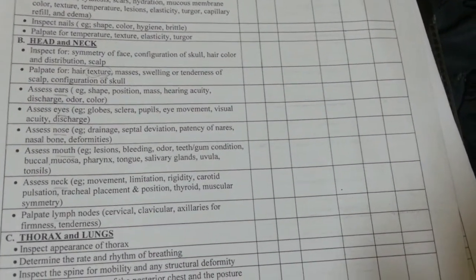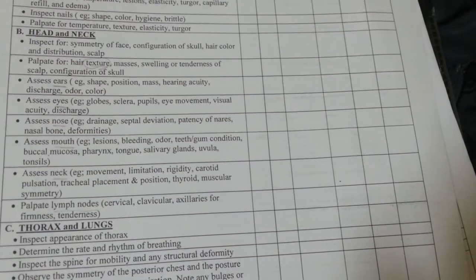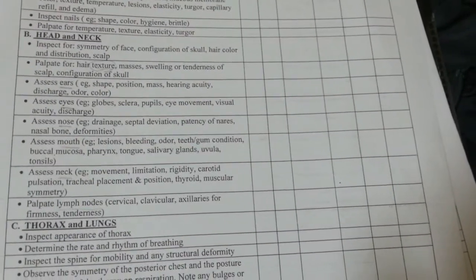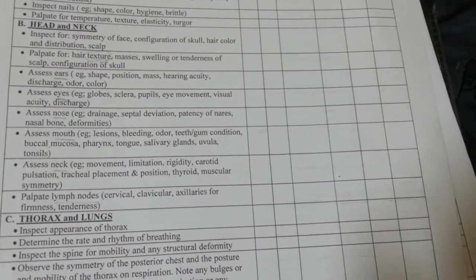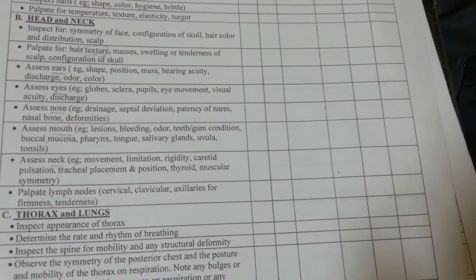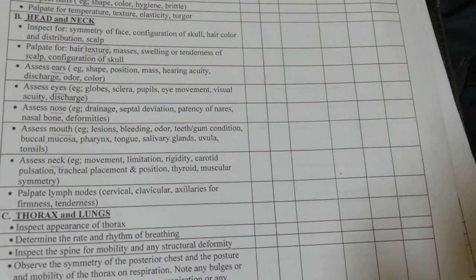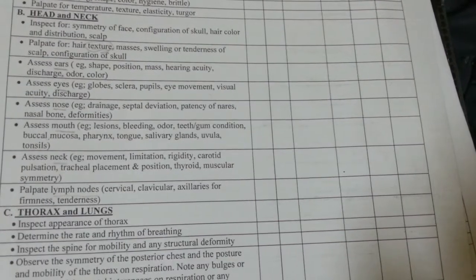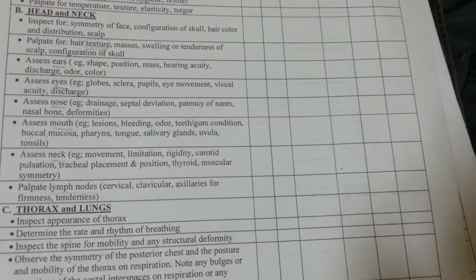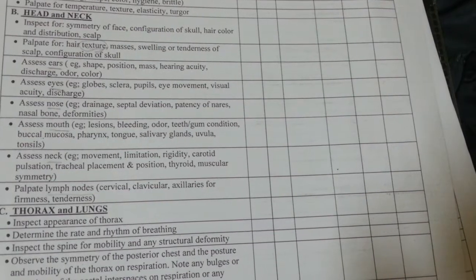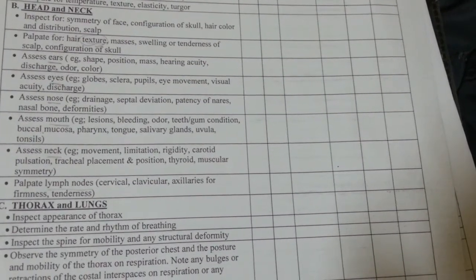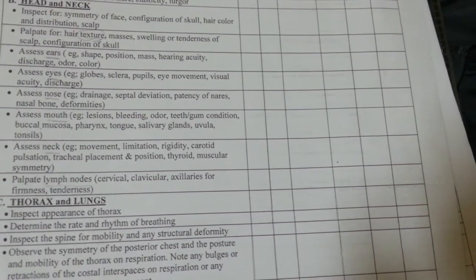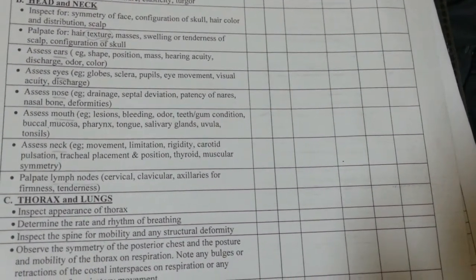Assess the eyes, including the globes, sclera, pupils, eye movement, visual acuity, and discharge. Assess the nose by noting drainage, septal deviation, patency of naris, and nasal bone deformities. Assess the mouth for lesions, bleeding, odor, teeth and gum condition, buccal mucosa, pharynx, tongue, salivary glands, uvula, and tonsils.